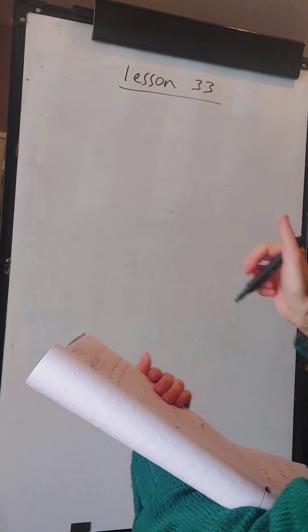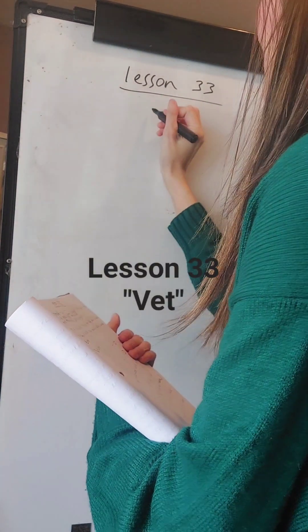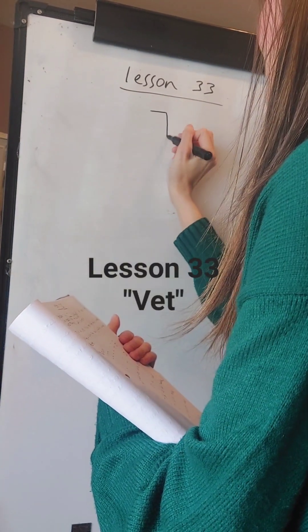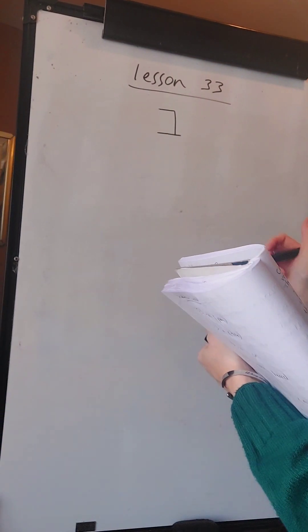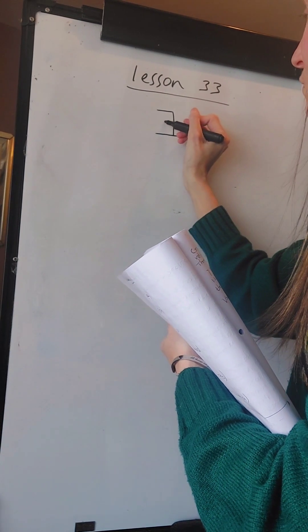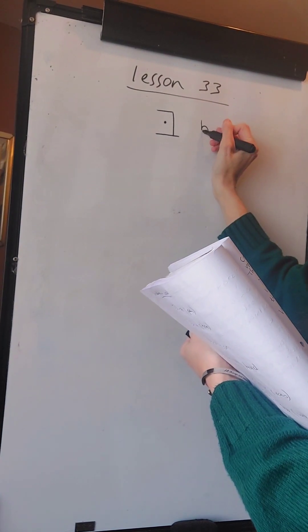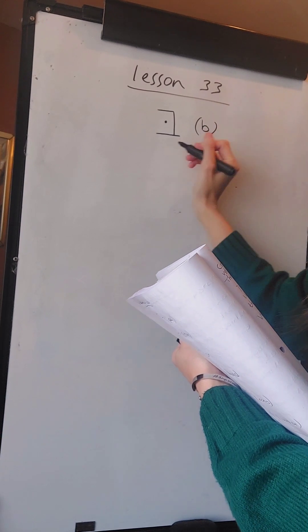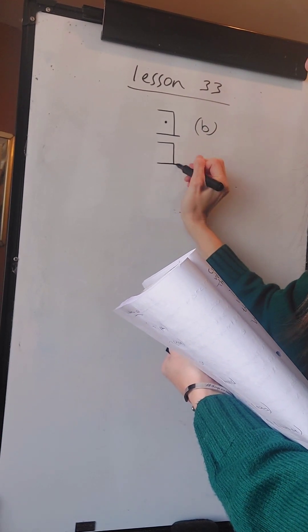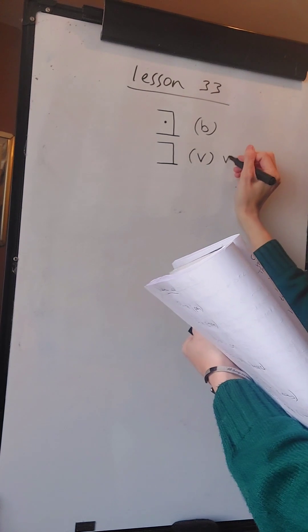Today we're going to look at a new consonant - the Vet. Vet is written like this. From a previous lesson, this is also the same style as the Bet. Bet has the dot in the middle and sounds as B, and without the dot it sounds as V - it's Vet.